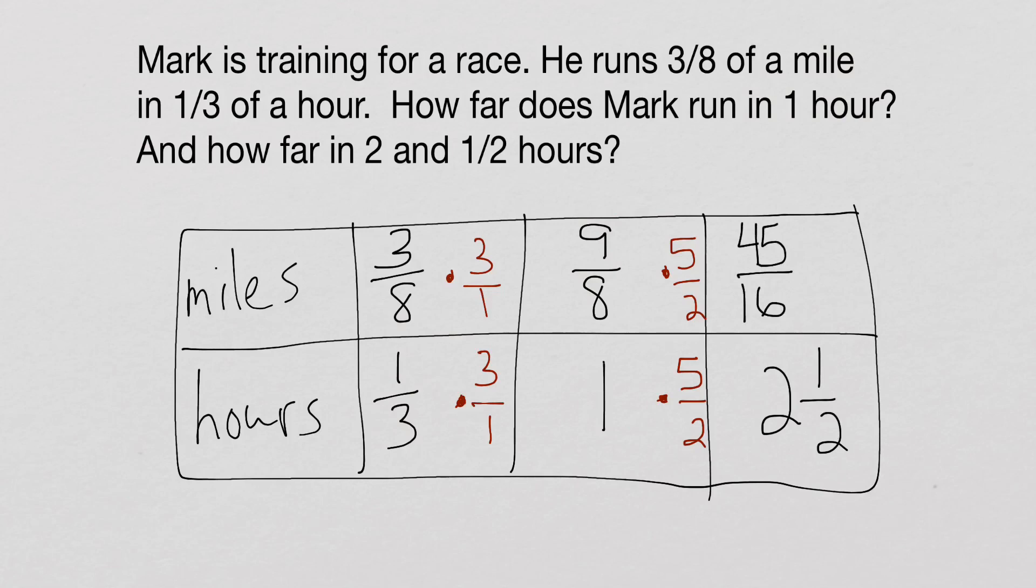And the last thing I need to do is take that and make it into a mixed number. So I'm going to finish it off by just saying that that equals two and 13 sixteenths. That's my final answer, and I'm done right there.